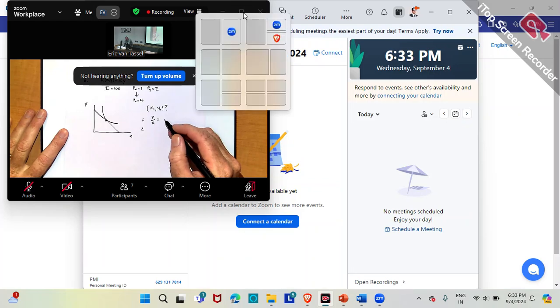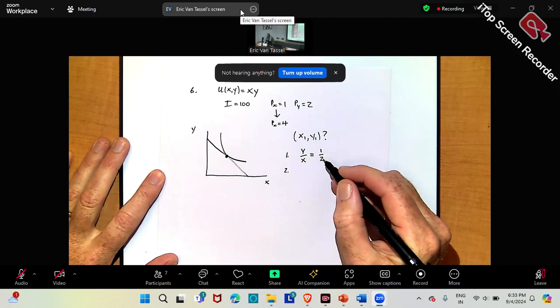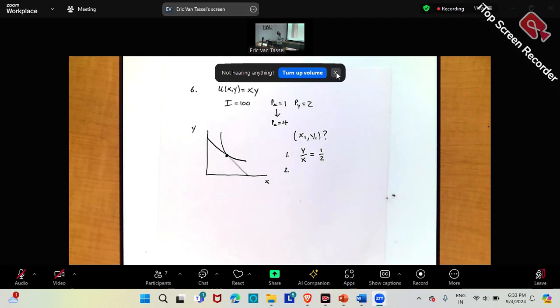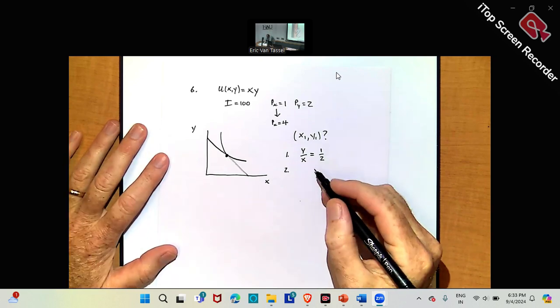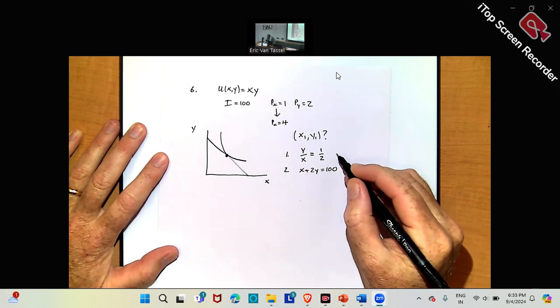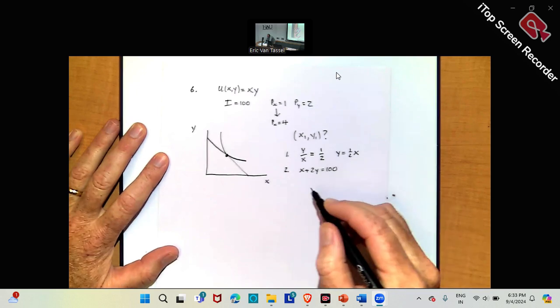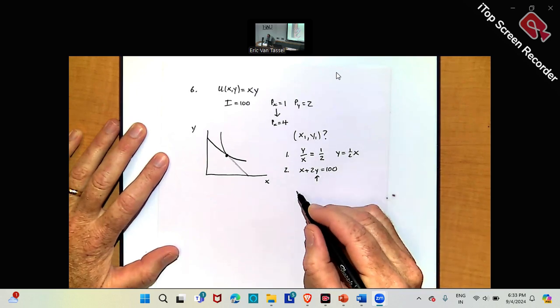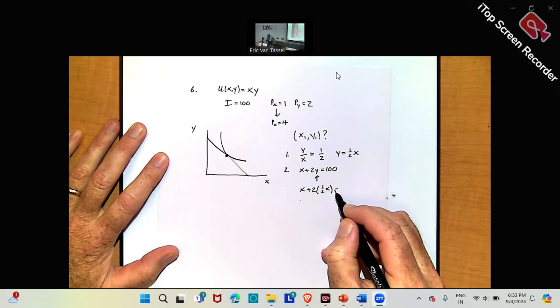px over py, which is in this case 1 over 2, and that's the slope of the budget line. So I've got condition 1, and then the second condition is the budget line. So x plus 2y equals 100. So this is just y equals 1 half x, and I can set that in right here.